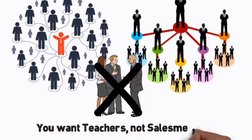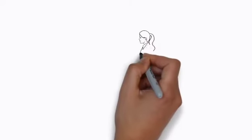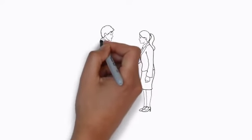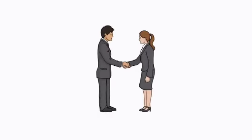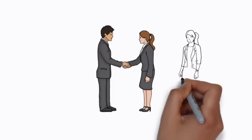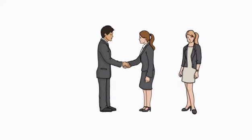You want teachers, not salesmen. Duplication happens when you teach Tom how to sponsor Carol. You then teach Tom how to teach the system to Carol. Tom then needs to teach Carol how to sponsor Betty. Once Carol teaches Betty how to sponsor and teach the system, true duplication has begun.